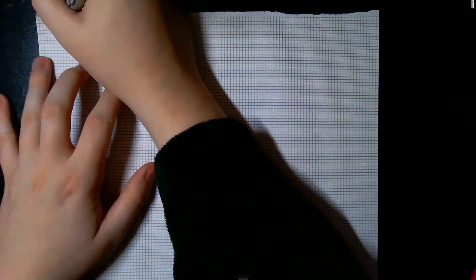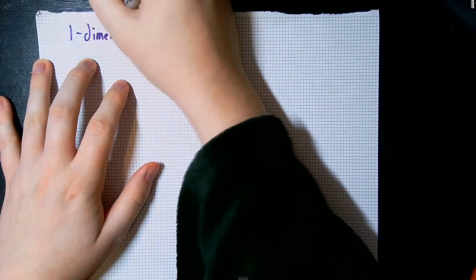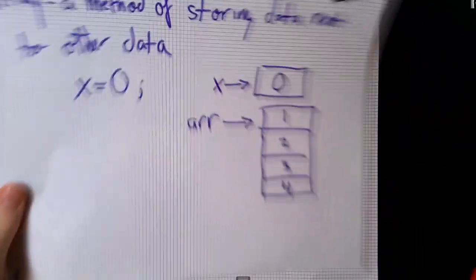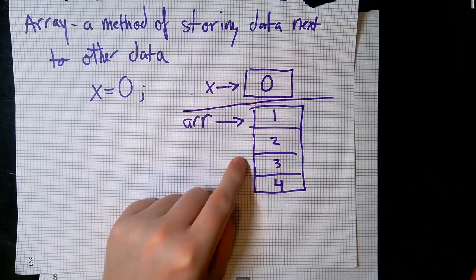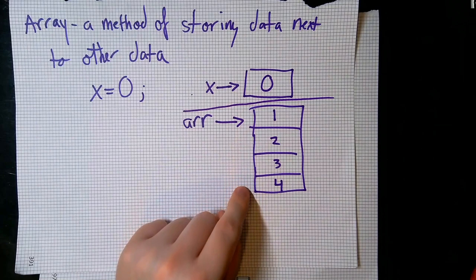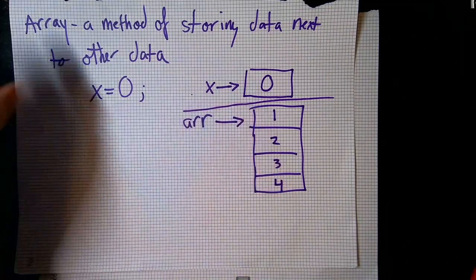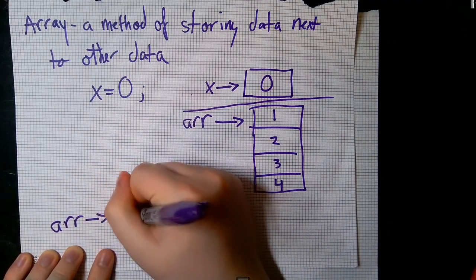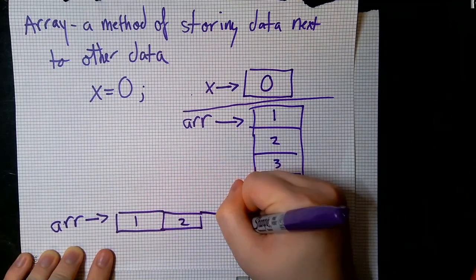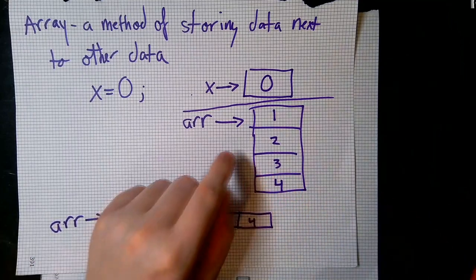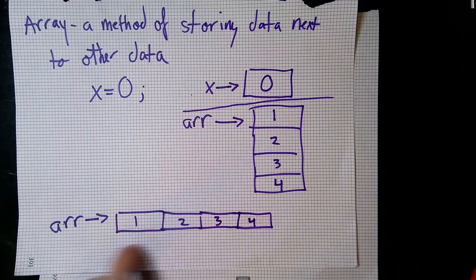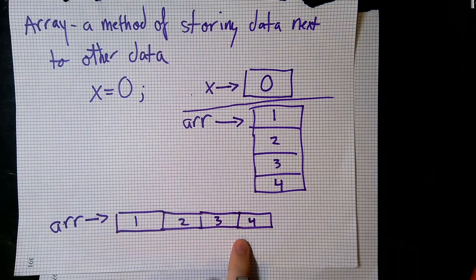The first part of this video will focus on what we call one-dimensional arrays. All the examples I've given so far have been one-dimensional arrays. For example, array r is one-dimensional because our stack of boxes only goes in one direction. We can also have a one-dimensional stack that goes sideways. This r here is a vertical array — you can also call it a column matrix or column vector. The other r is a horizontal array, or a row matrix or row vector.